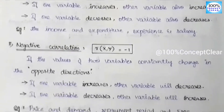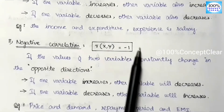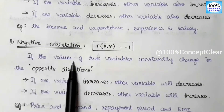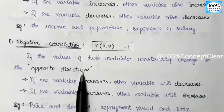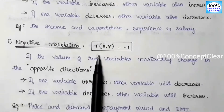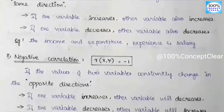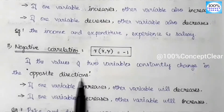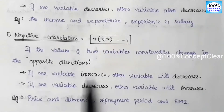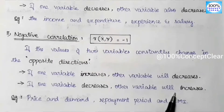The second type is negative correlation. The negative correlation value is minus 1, so we have the coefficient of correlation as minus 1. The correlation is negatively correlated. If the value of two variables constantly changes in the opposite direction, the variables move in the opposite direction — that is negative correlation. If one variable increases, the other variable decreases.